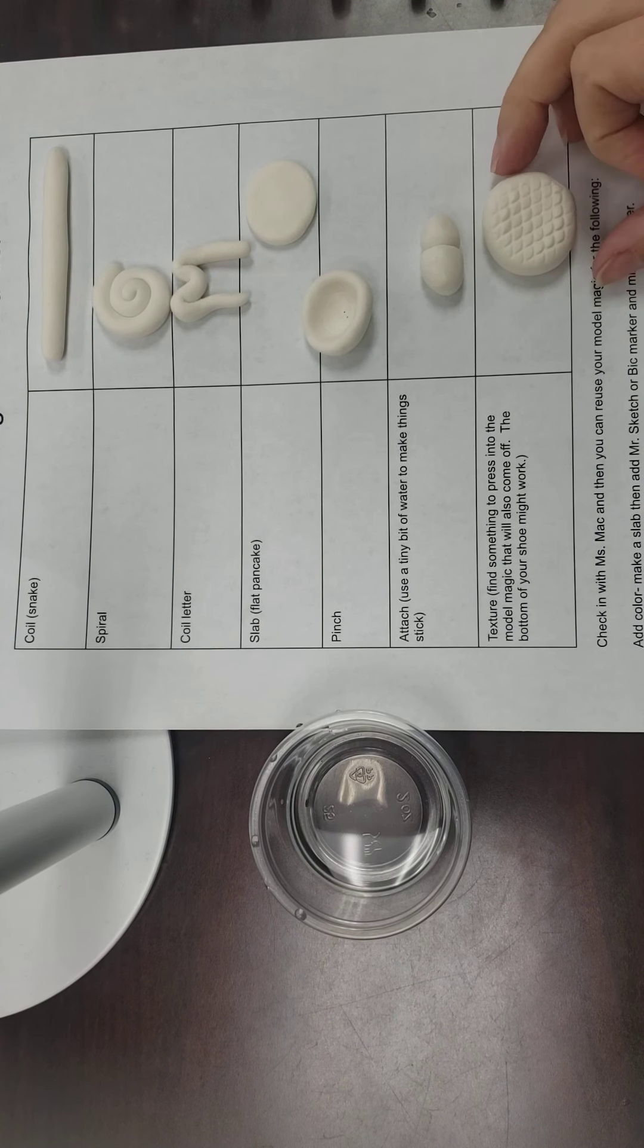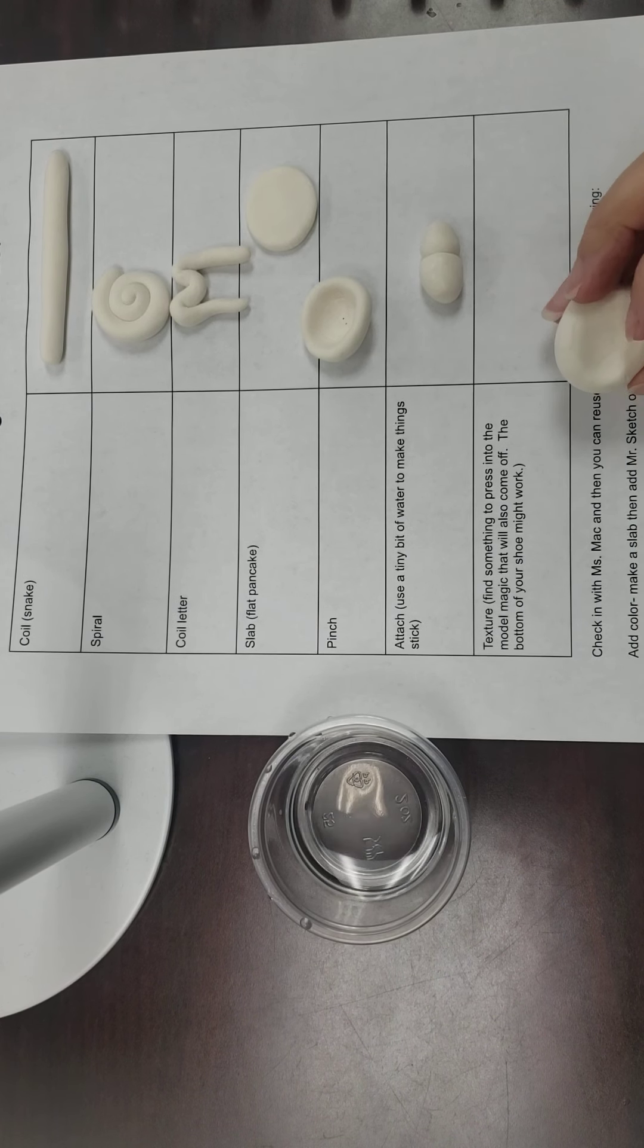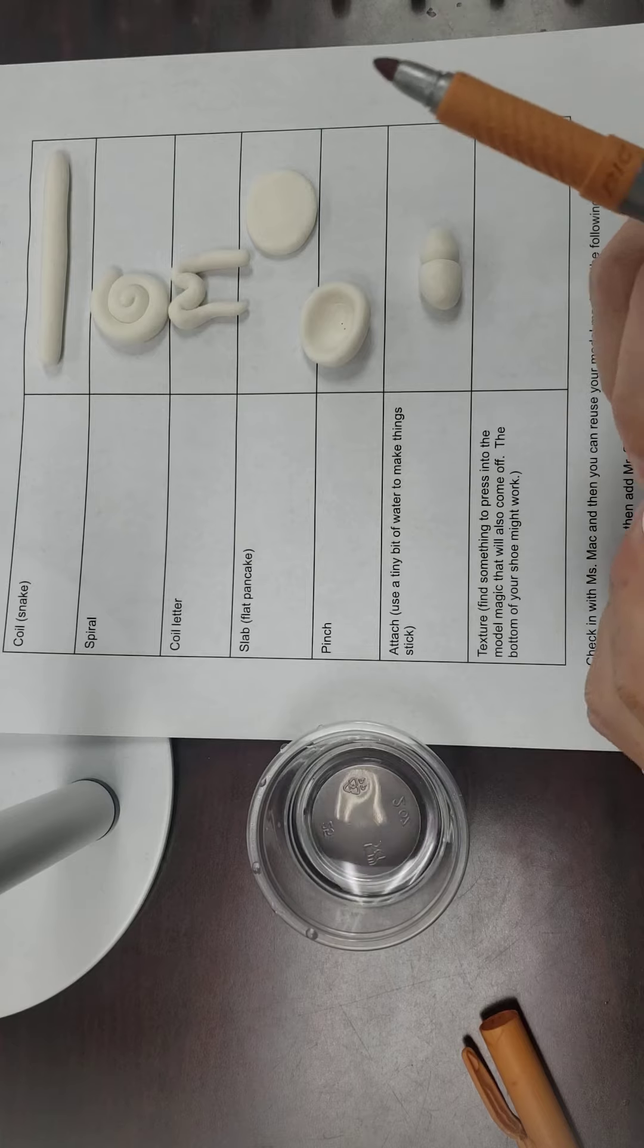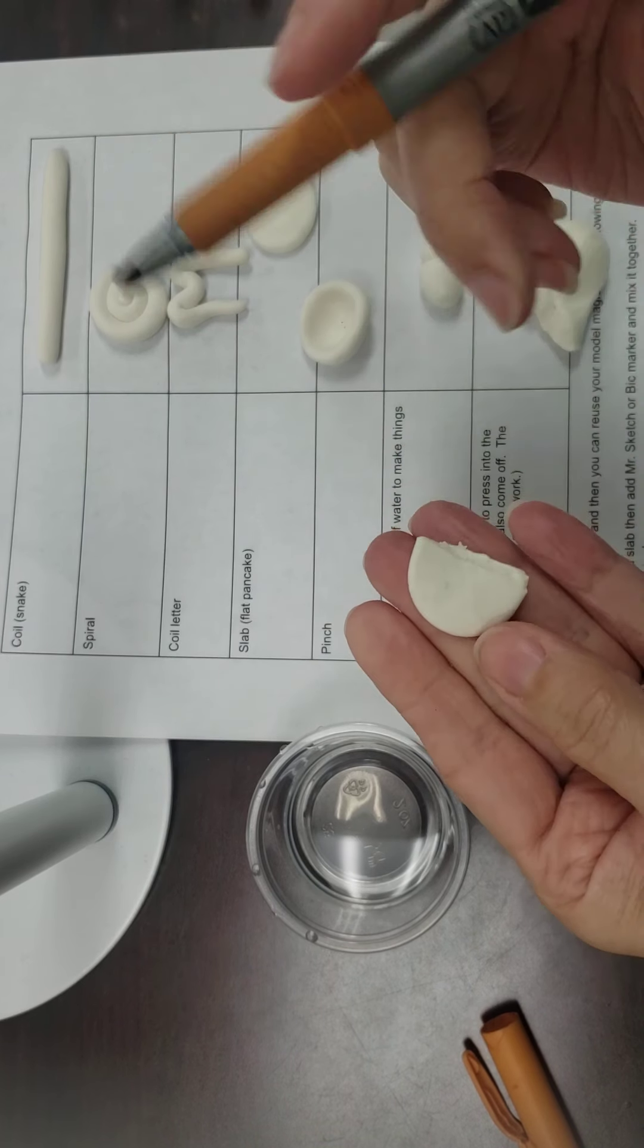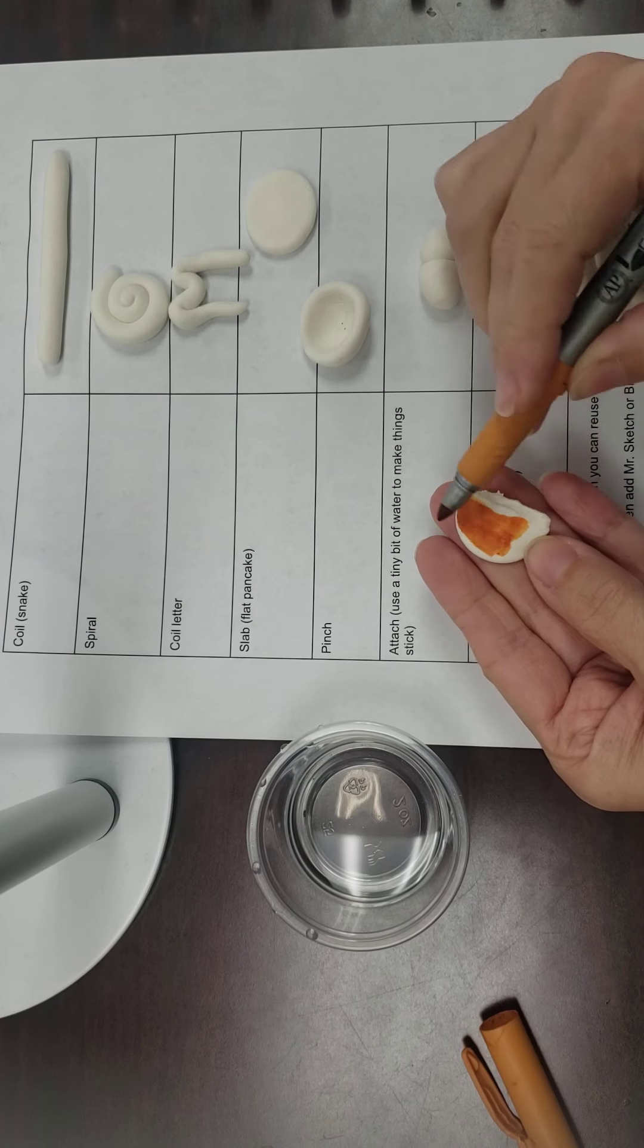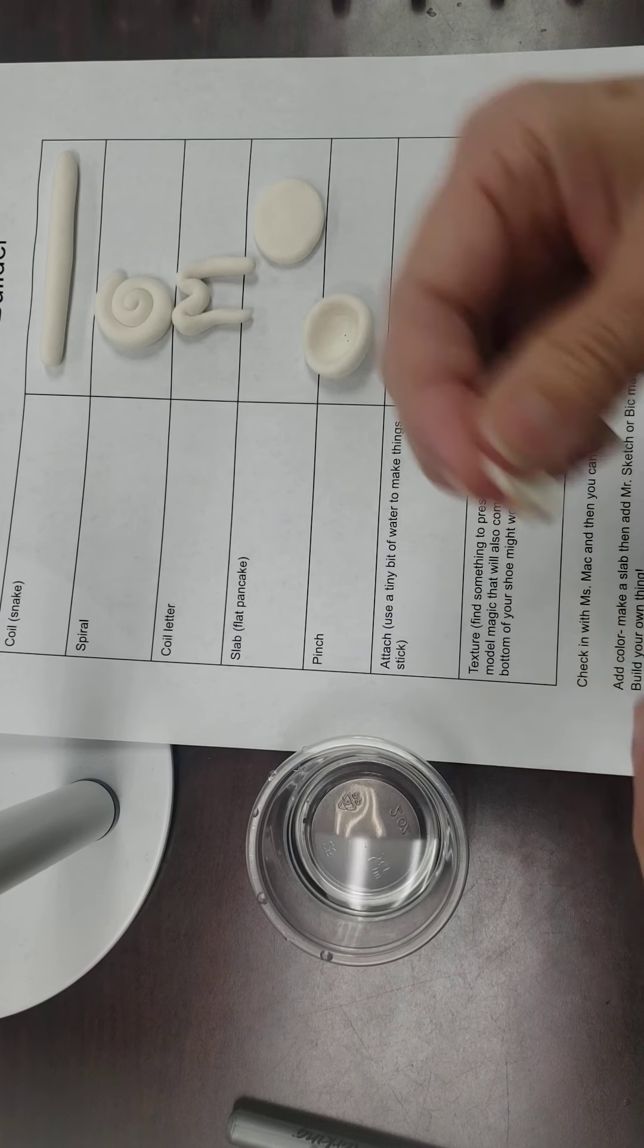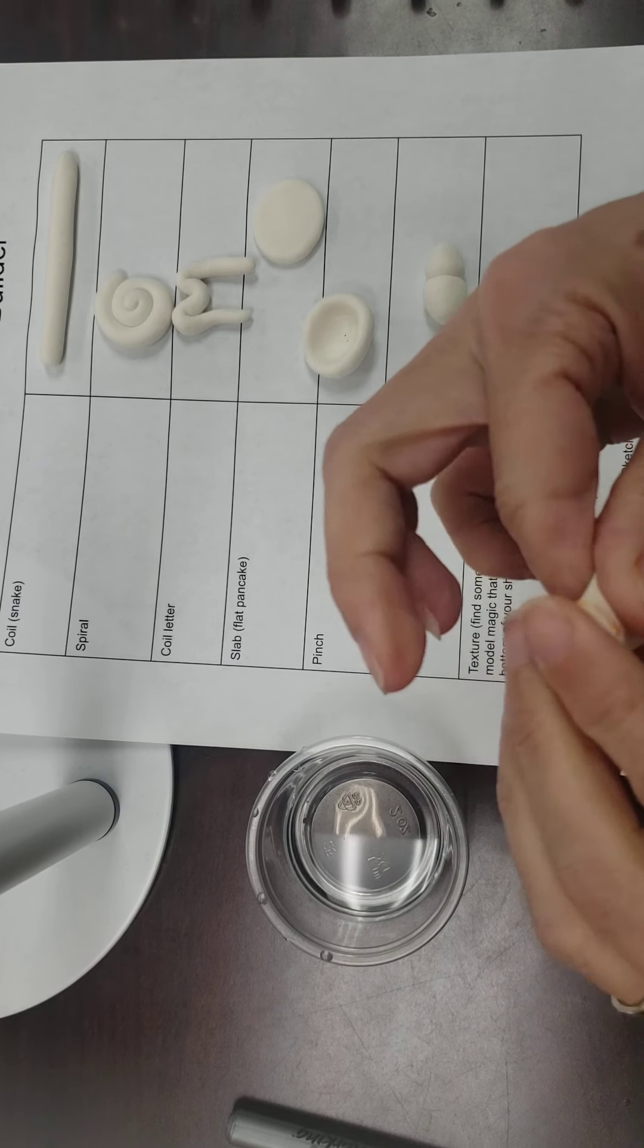Okay, we also can add a little bit of color to our model magic, so I'm going to show you that. I'm just going to add a little bit of this tan-ish brown here, and I'll just do it with a small piece to show you how. Again, a little flat pancake of clay, add marker to your clay, and then mix it together. Your hands will get messy, so please know that in advance.